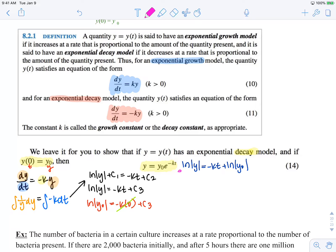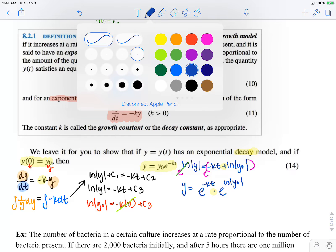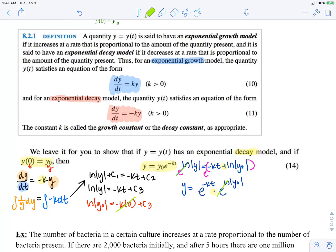To solve for y, I'm going to exponentiate both sides. e to the ln cancels and we're left with y equals e to the negative kt times e to the ln absolute value of y0. Note that this adding of exponents means that we're multiplying common bases. e to the ln cancels and we're left with y of t equals y0 e to the negative kt.